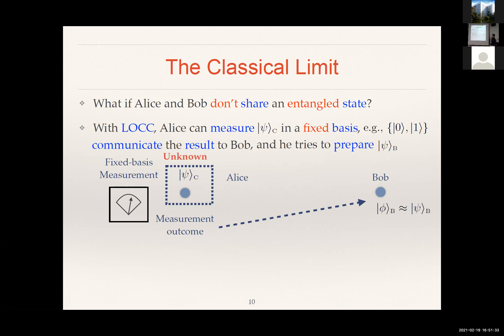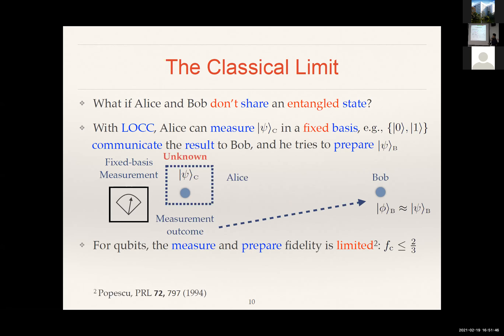But again, the same argument applies: we should not be considering this over specific pure states, but should be considering this on the average. And then in this case, it was shown back in 1994 by Sandu Popescu that if you consider these measure-and-prepare strategies, then for qubits this average fidelity is upper bounded by two-thirds.